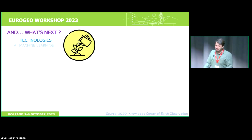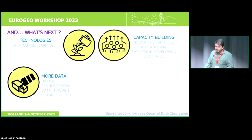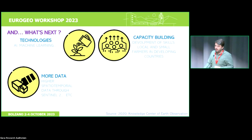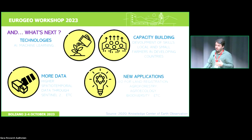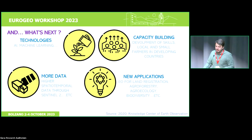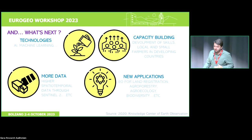Looking ahead: we will have more data, AI, machine learning, and deep learning. We are increasing capacity development and local skills. We want to reach local farmers, especially in developing countries, with new applications: EO for land registry, agroforestry, agroecology, and biodiversity. There is a lot of room for improvement. We have the skills, the knowledge, and we are all here together. As Margaret Mead said, a thoughtful group of people can change the world.